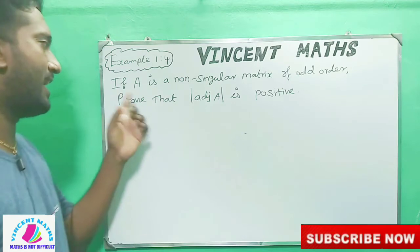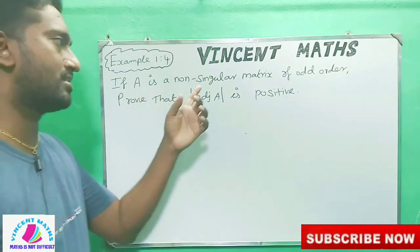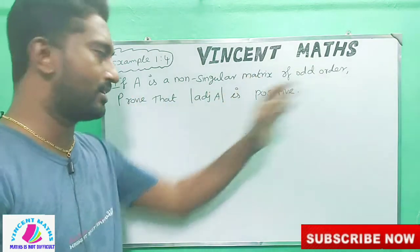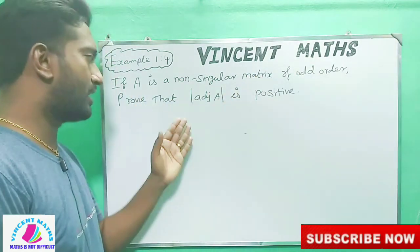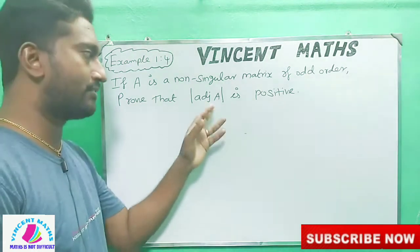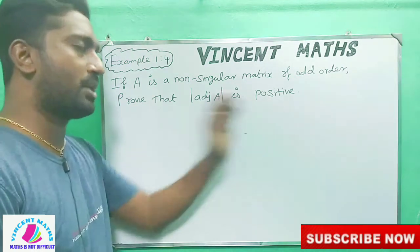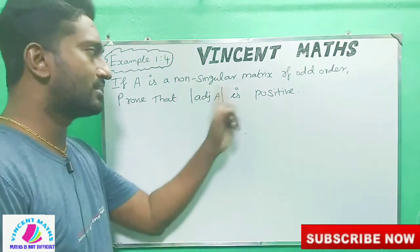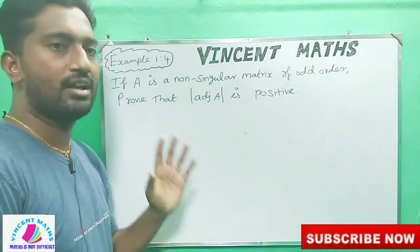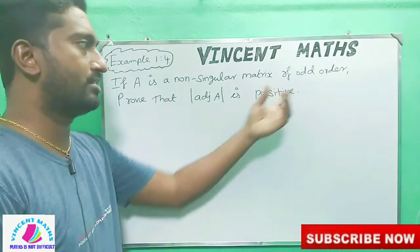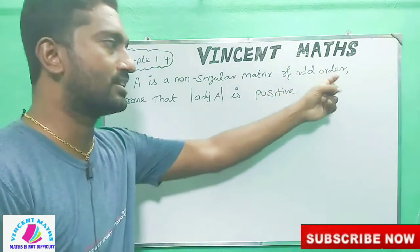If A is a non-singular matrix of odd order, prove that the determinant of A is a positive. Non-singular is a bijective — bijective and bijective. That is odd order.